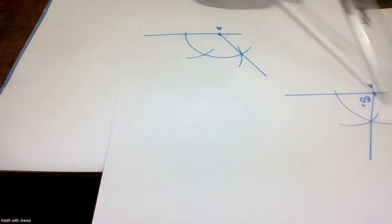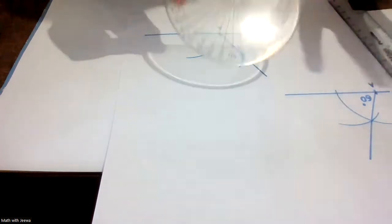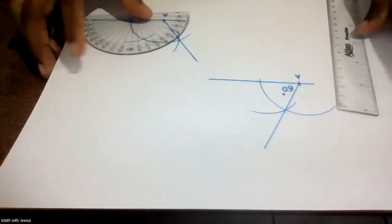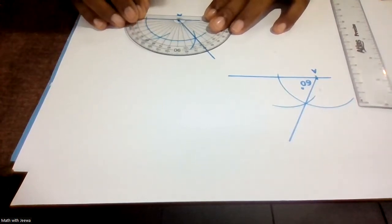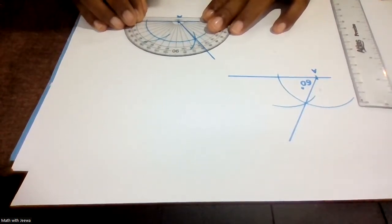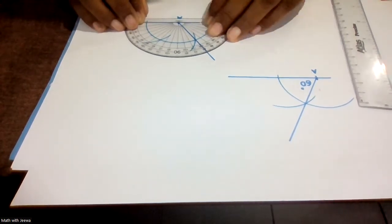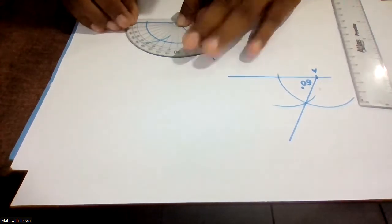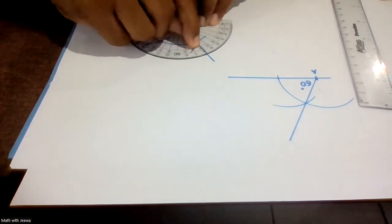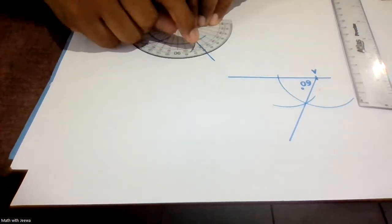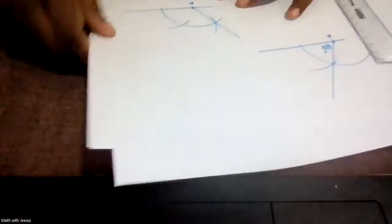I want to cross check whether my construction is correct. I take my protractor and keep it like this. You want to measure from the inner zero, and yes it is 120. That means my angle is correct — my construction is correct. So I write it as 120.